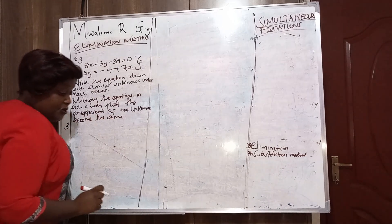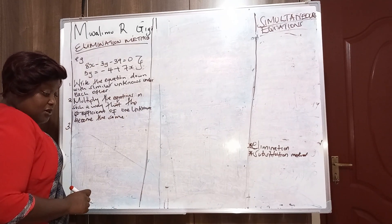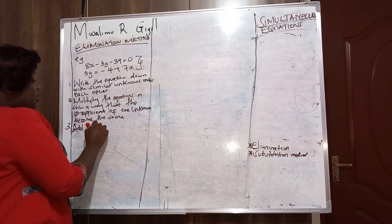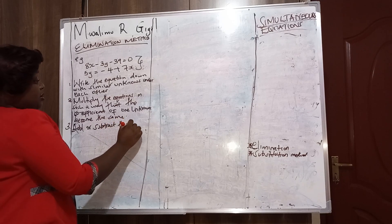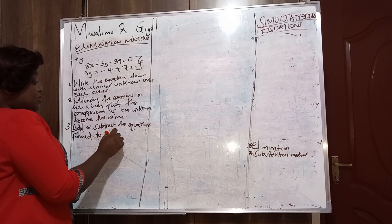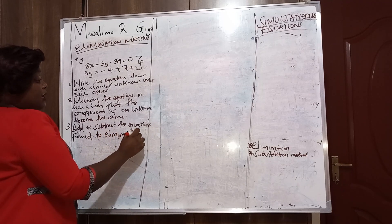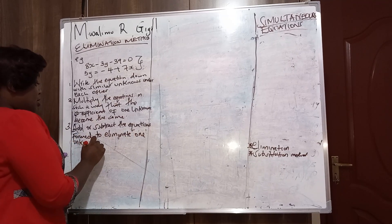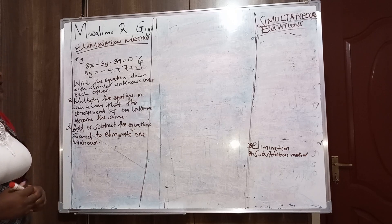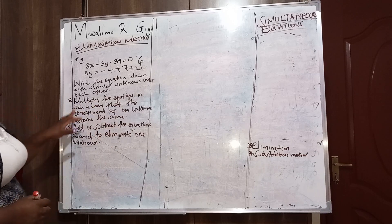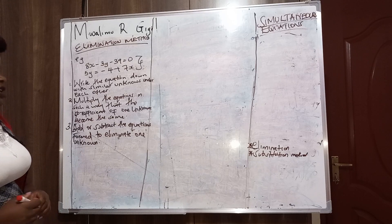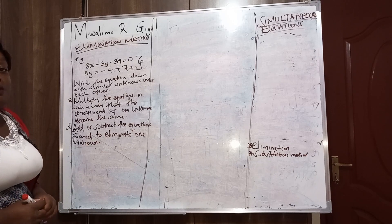Step number three: add or subtract the equations formed to eliminate one unknown. So to summarize: first, write the equations with similar unknowns under each other; then multiply so the coefficient of one unknown becomes the same; then add or subtract the equations formed to eliminate one unknown.